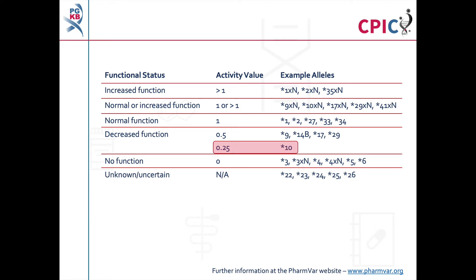As a result of the CPIC CYP2D6 genotype to phenotype standardization project, the CYP2D6 star 10 allele was assigned an activity value of 0.25. This reflects its significantly reduced function compared to other decreased function alleles. As this guideline was published before completion of the standardization project, the star 10 allele is still given an activity value of 0.5 in the original manuscript. However, the guideline has been fully updated in the CPIC database to account for the new activity value of star 10. This update has not altered the guideline recommendations.